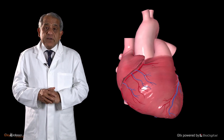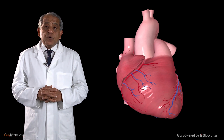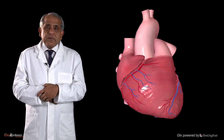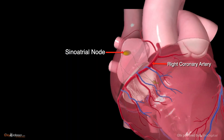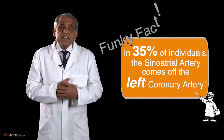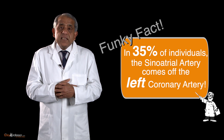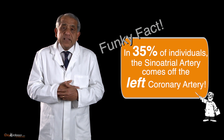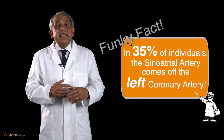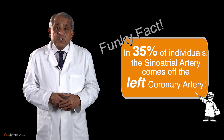The right coronary artery very early in its course gives off an important branch for the pacemaker of the heart, the sinoatrial node. So the sinoatrial nodal artery is usually an early branch of the right coronary artery. However, in about 35% of individuals, the artery to the sinoatrial node does not come off from the right coronary artery — in those instances it is an early branch of the left coronary artery.